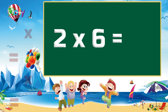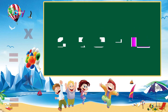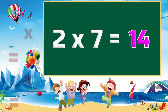Two sixes are twelve. Two sevens are fourteen. Two sevens are fourteen.